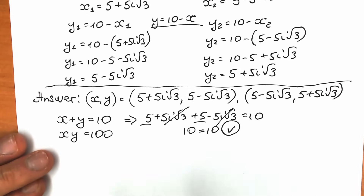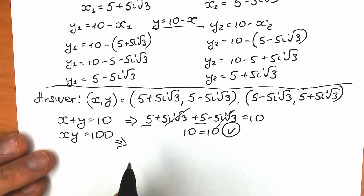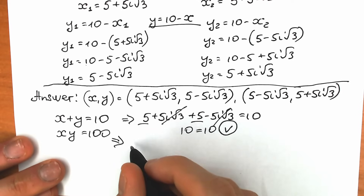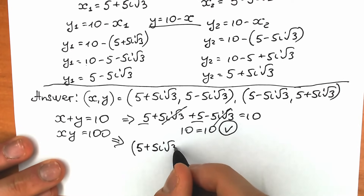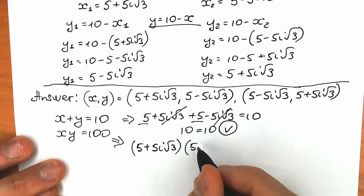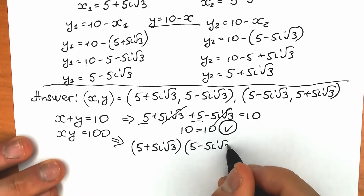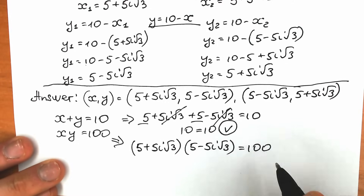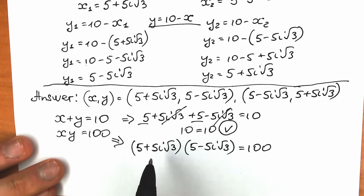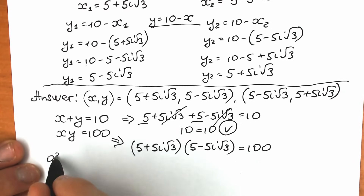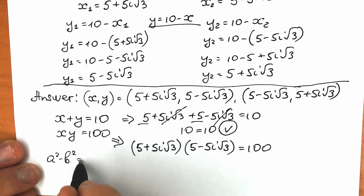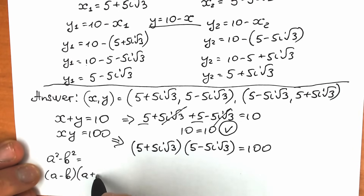Now let's check the product. We have (5 + 5i√3)(5 − 5i√3) should equal 100. Notice these are in the form (a + b)(a − b), which is the difference of squares formula: a squared minus b squared.